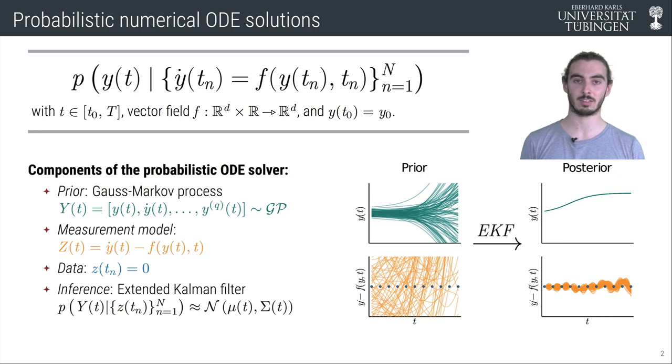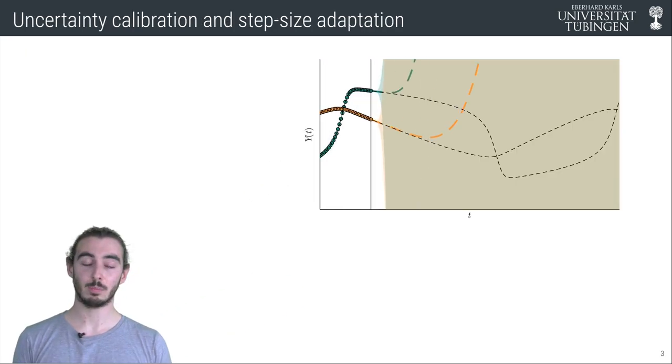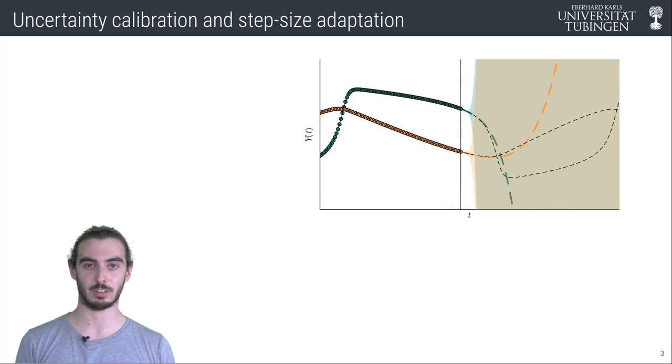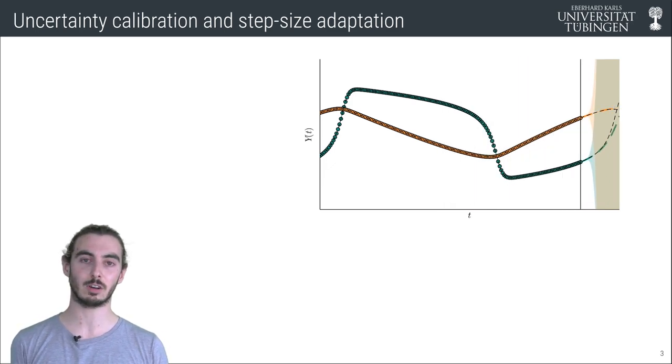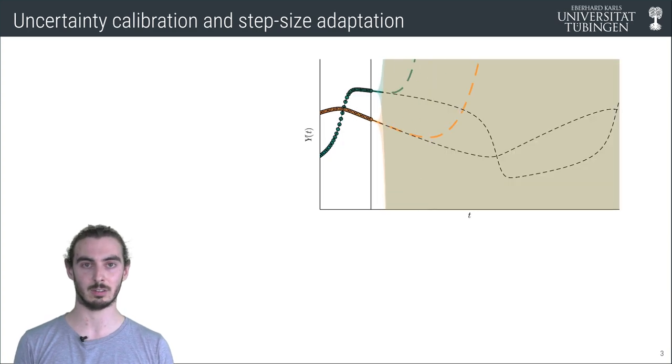Let's look at the solver in action. The probabilistic solver is able to find the correct solution trajectory. But we observe that the uncertainties of the extrapolations do not accurately reflect the actual error.